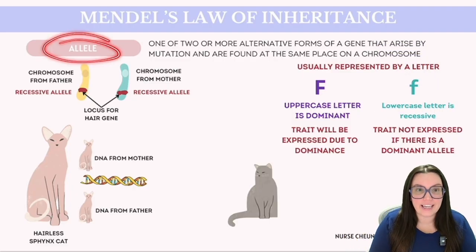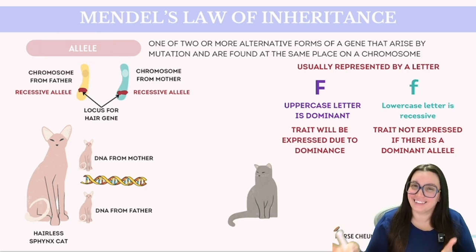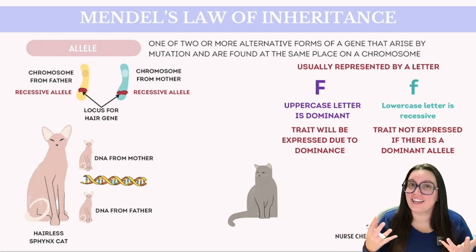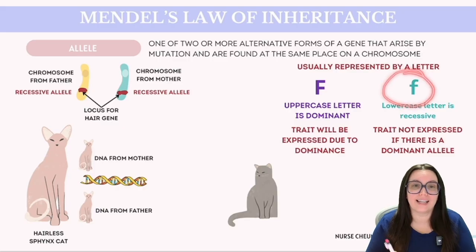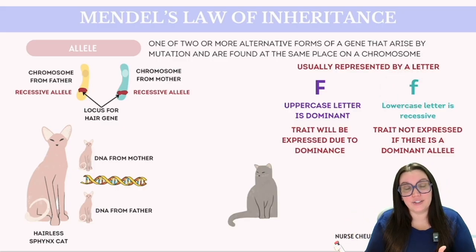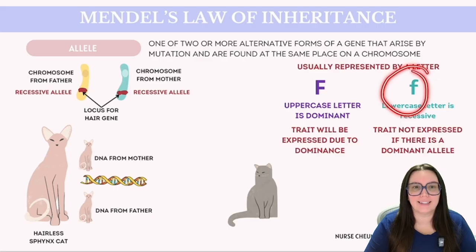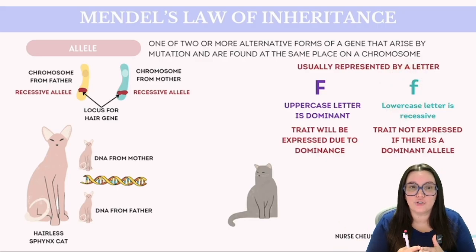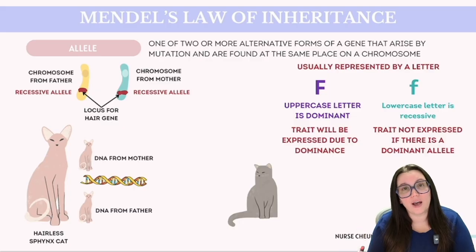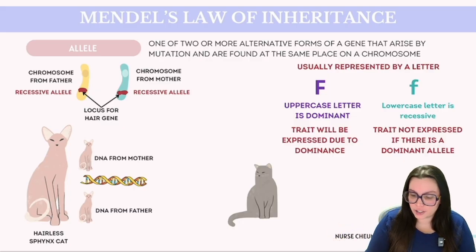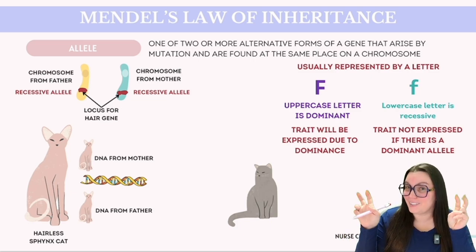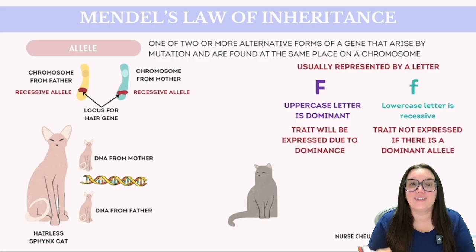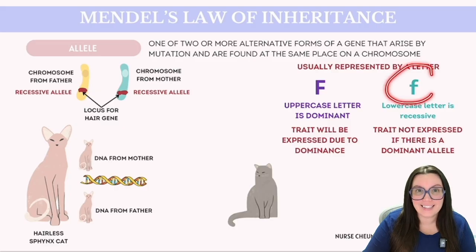An allele is a variant of a gene, often recognized by letters. For our discussion, we're going to use the letter F to represent fur. A sphinx cat, known for its lack of fur, is going to possess two recessive alleles for the fur trait. Recessive alleles are typically indicated by the lowercase letter, meaning this trait will only manifest if there are no dominant alleles present. Dominant alleles, marked by their uppercase letter, are traits that are expressed — they dominate over the others. Therefore, the sphinx cat lacks the dominant fur gene, allowing the recessive trait of being furless to be expressed.